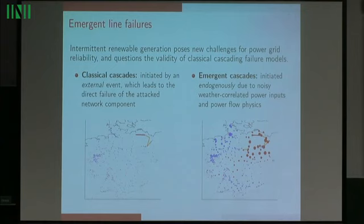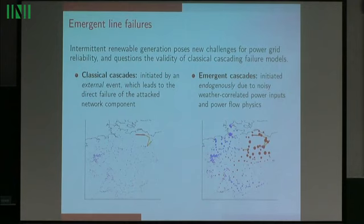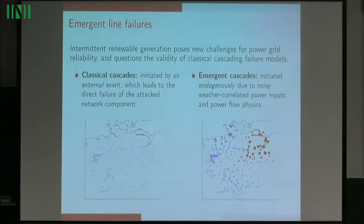Usually, in the classic network literature, we have a classical model for failures and cascading failures, which is as follows. We have an external event that leads to the direct failure of some network component, here a transmission line. In the presence of a lot of renewable energy, this model may not be the most adequate. For this reason, we focus on a fundamentally different model — the one of emergent cascades, where a failure happens because of the nodal fluctuations in renewable energy, which can be summed up in very complex ways by network topologies and power flow physics, and give rise to unexpected failures.